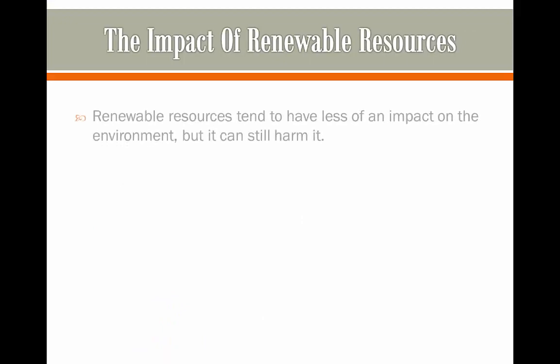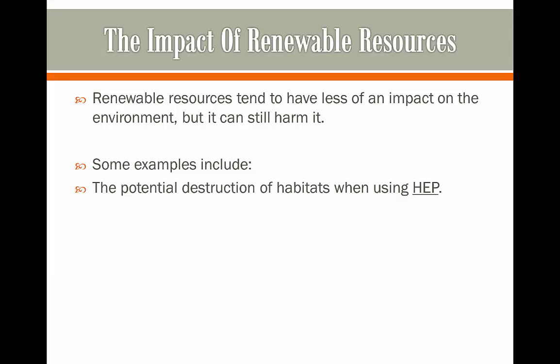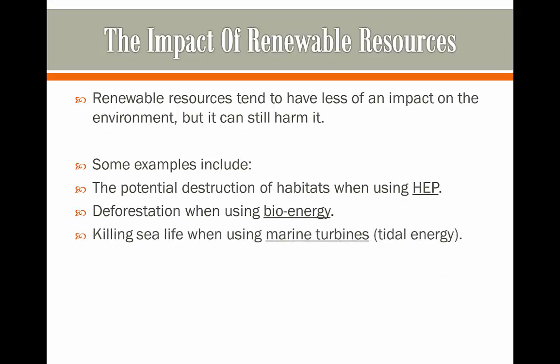The impact of renewable resources. Renewable resources can also have an impact on the environment, but they tend to have less of an impact. Examples include the potential destruction of habitats when building an HEP plant, otherwise known as a dam, and it can also prevent animal migration routes, which is always a problem. Deforestation when using bioenergy can occur, which can destroy habitat and harm animals. Killing sea life when using marine turbines in tidal energy can harm biodiversity and disrupt the food chain.